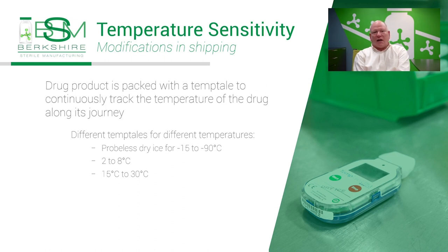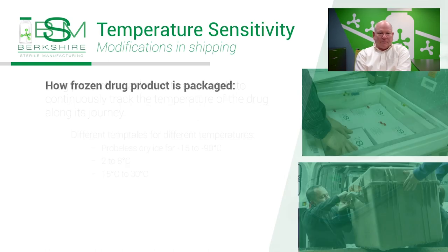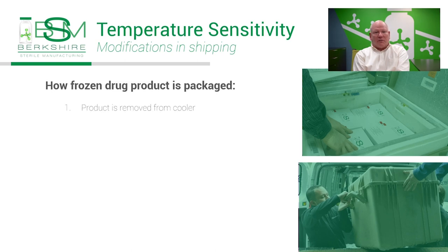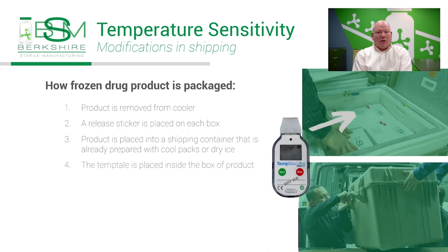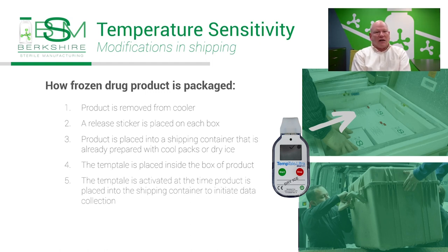We use Sensatec United Technologies temp tails, with two different types for chilled or frozen products: dry ice for minus 15 to minus 90 centigrade, and 2 to 8 degrees centigrade. These temp tails track the temperature of the shipment along its journey and couriers and receivers can access the information by scanning the temp tails. Minus 20, minus 40, and minus 80°C items are transferred right from the coolers into the shipping container, with a release sticker placed on each box. The product immediately goes into the shipping container already prepared with cool packs or dry ice, and the temp tail is placed inside and activated to mark the moment of loading and initiate data collection.